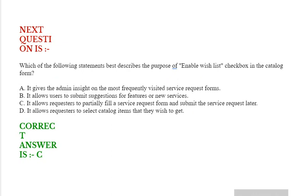Which of the following statements best describes the purpose of the enable wishlist checkbox in the catalog form? Option A: it gives the admin insight on the most frequently visited service request forms. Option B: it allows users to submit suggestions for features or new services. Option C: it allows requesters to partially fill a service request form and submit the service request later. Option D: it allows requesters to select catalog items that they wish to get. Correct answer is option C.